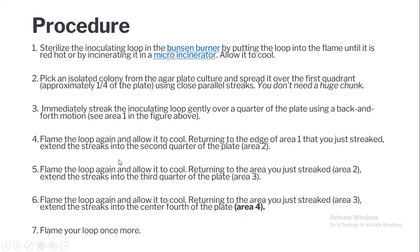Flame the loop again and allow it to cool down. Returning to the edge of the first area you just streaked, make streaks into the second quadrant of the plate. Flame the loop again, allow it to cool down, return to quadrant 2, and extend the streaks into the third quadrant. Again flame the loop, allow it to cool down, return to area 3, and extend the streaks into the central or fourth quadrant of the plate. Then flame your loop once again before putting it away.